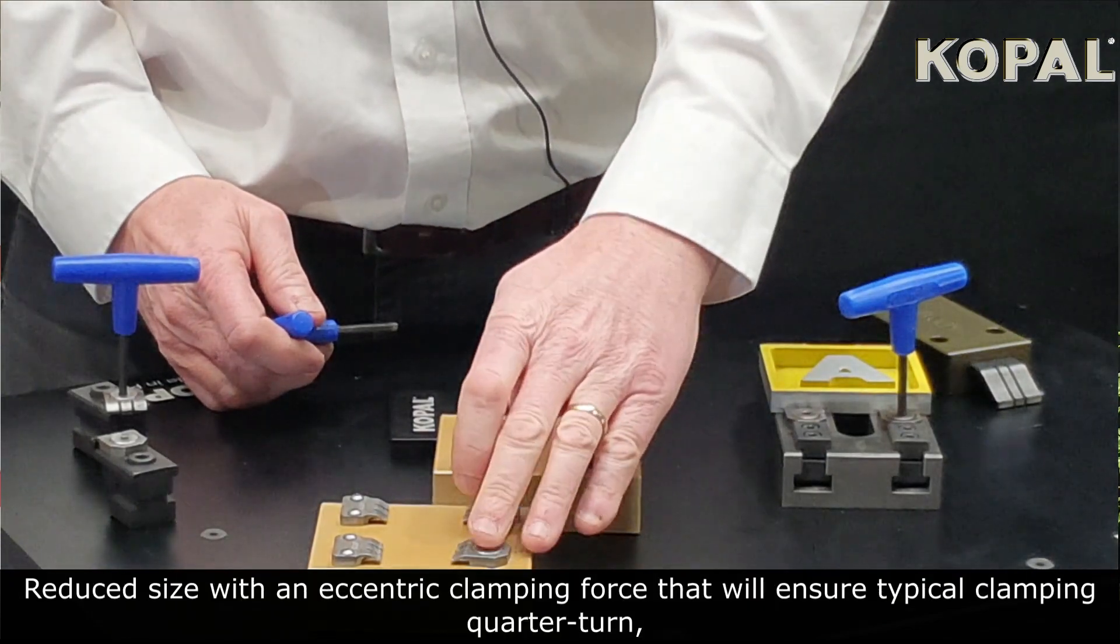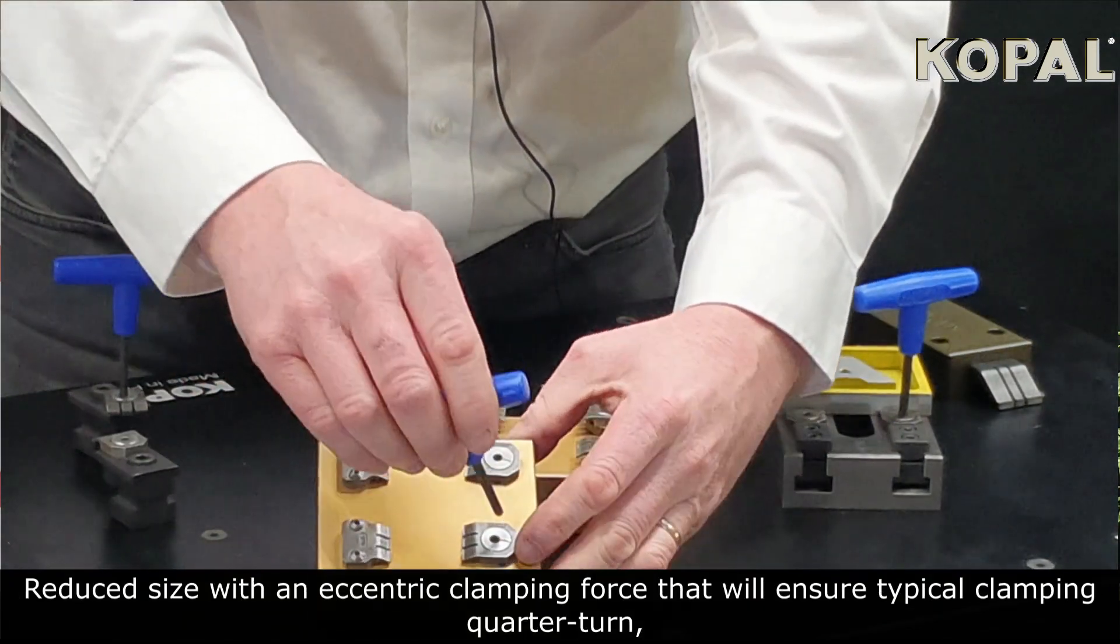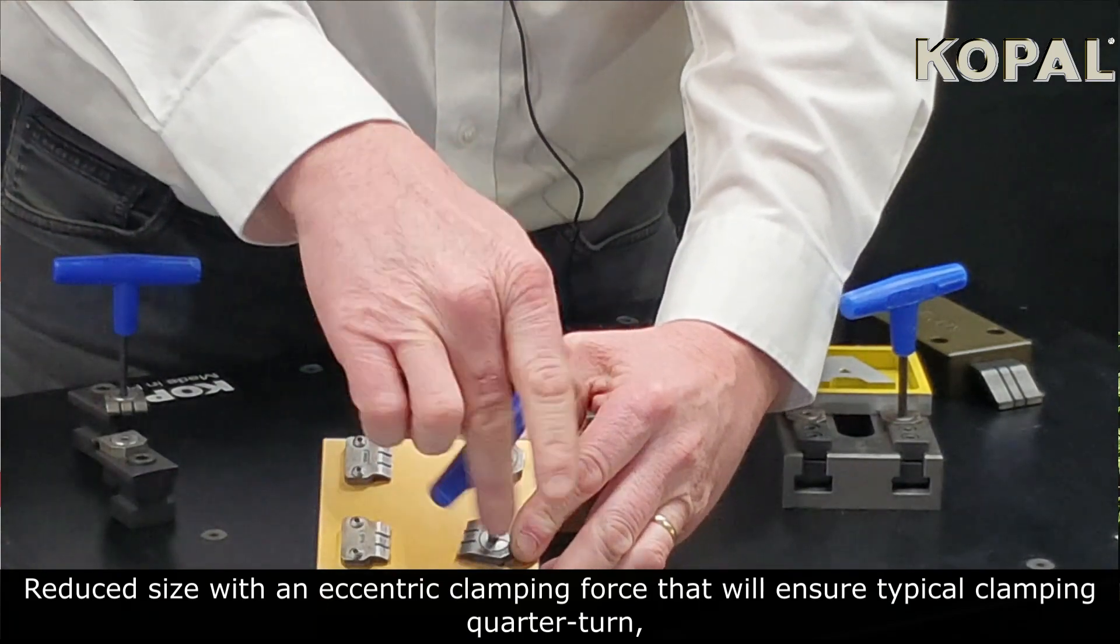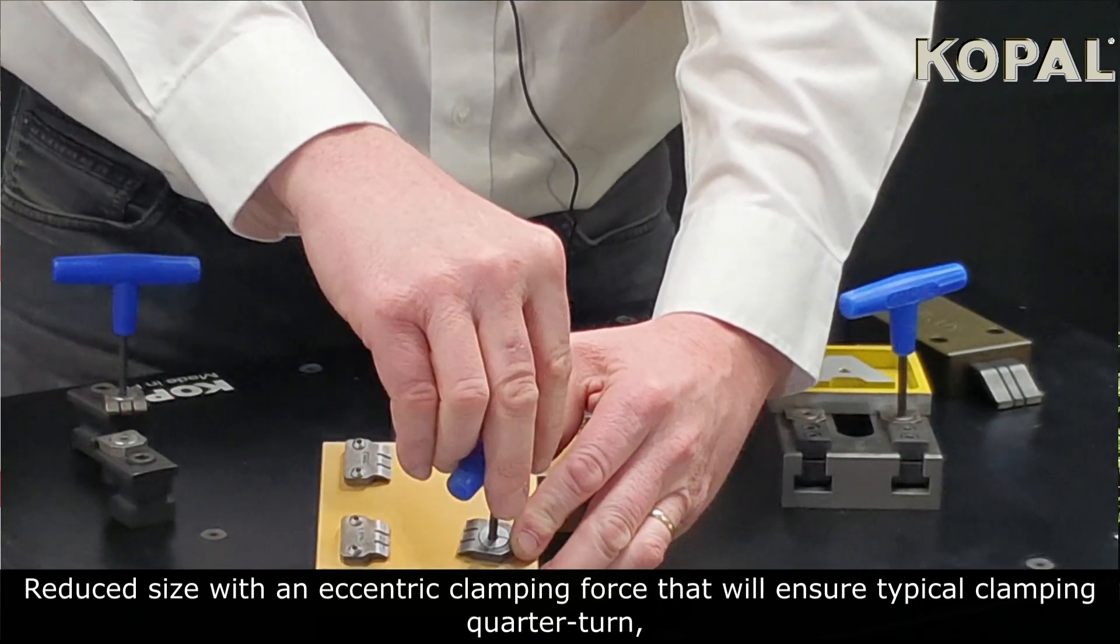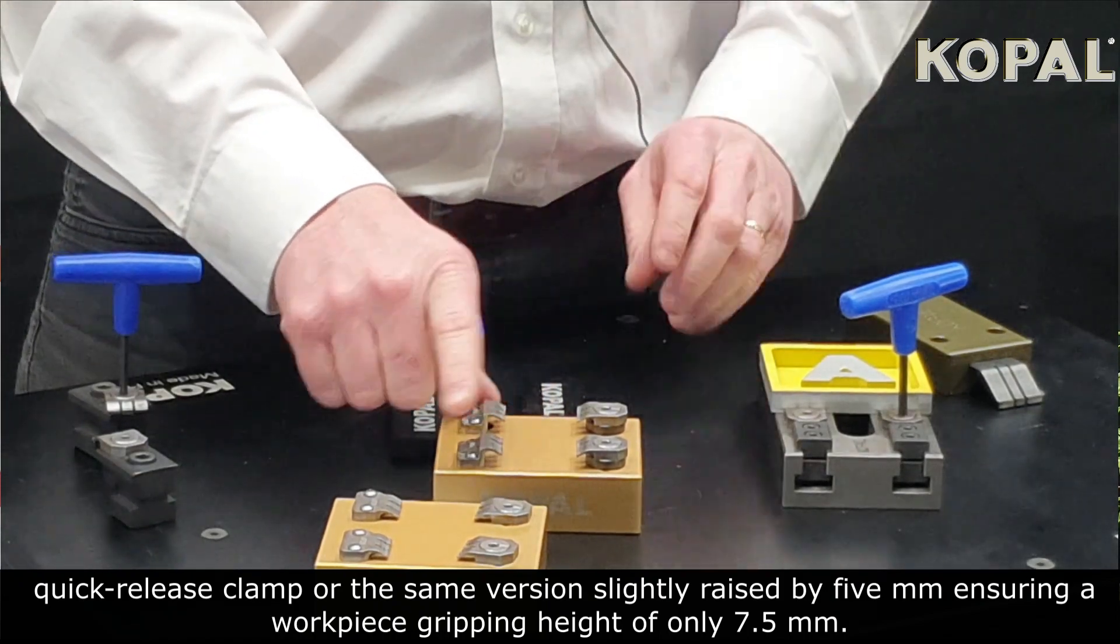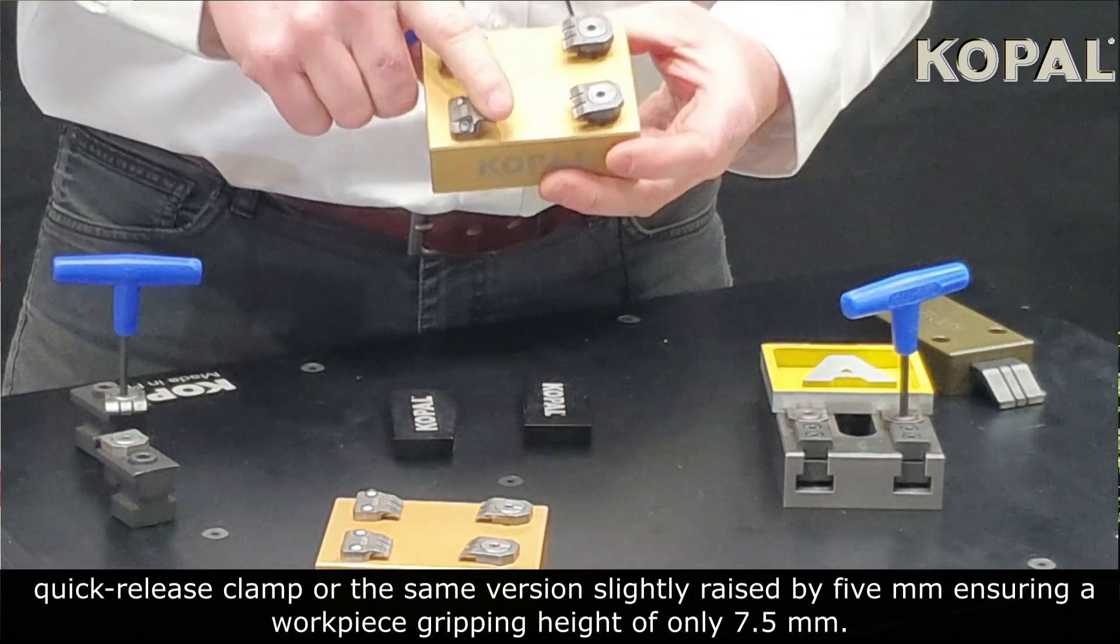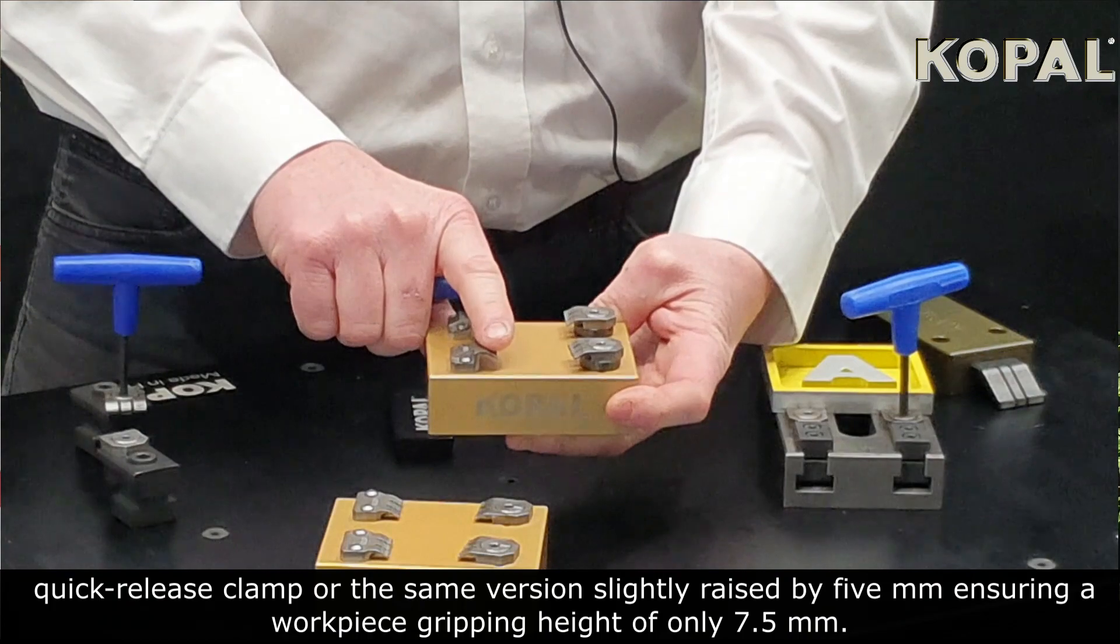Reduced size with an eccentric clamping force that will ensure typical clamping with a quarter turn, quick release clamp, or the same version slightly raised by 5 millimeters, ensuring a workpiece gripping height of only 7.5 millimeters.